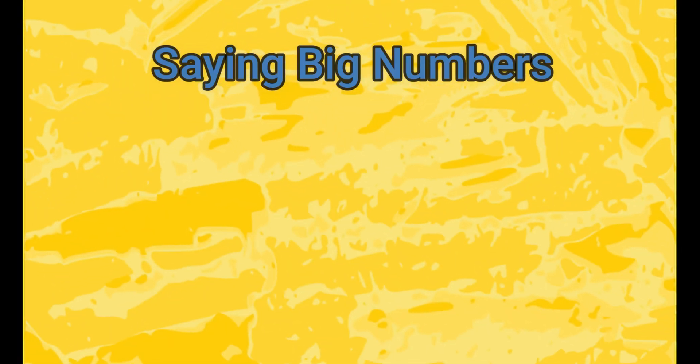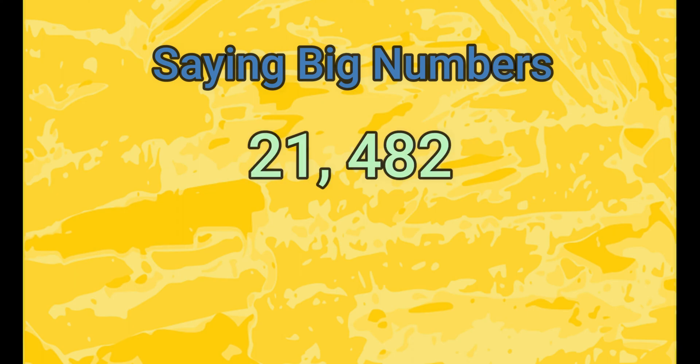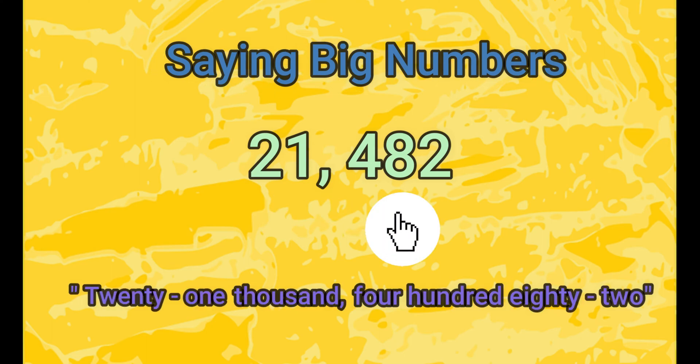When you're reading big numbers, remember what we learned about the comma. First, say the numbers before the comma, 21, thousand, 482.